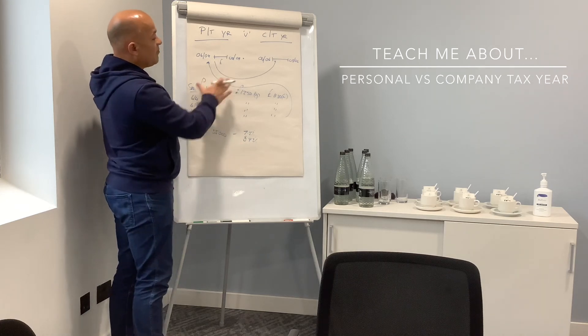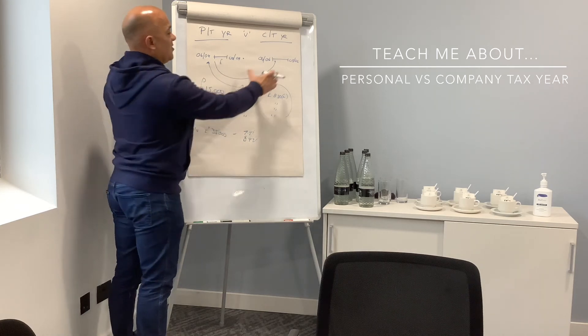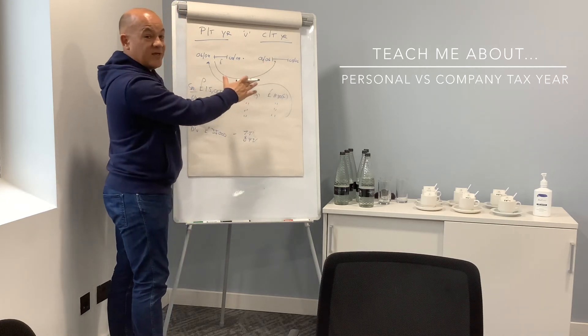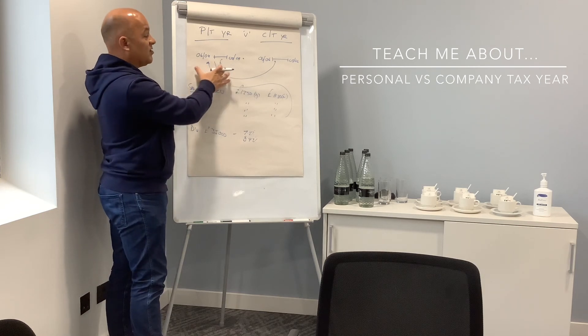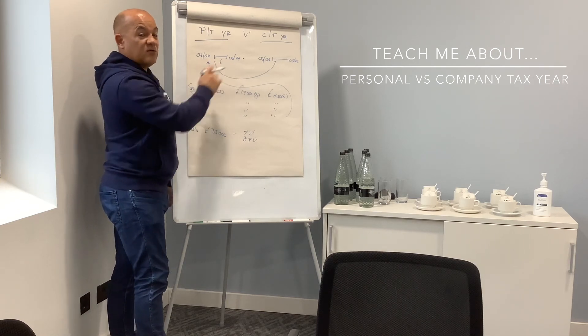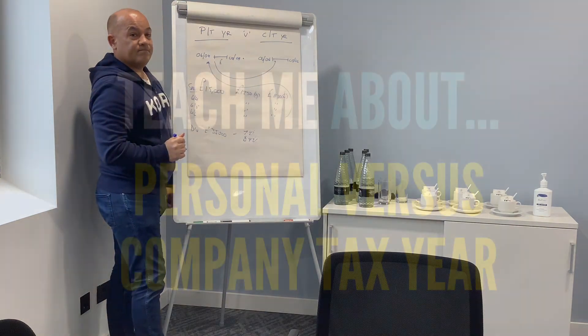And obviously we can talk about ways of leaving funds in the company and distributing relatedly. But that's company tax years - a 12 month cycle from the date of formation - and the personal tax year is fixed from the 6th of April through the 5th of April.